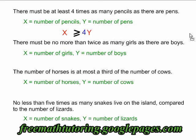Instead, you will multiply the smaller number by four. We will multiply the number of pens by four to try to equal the number of pencils. Let's do some more examples.